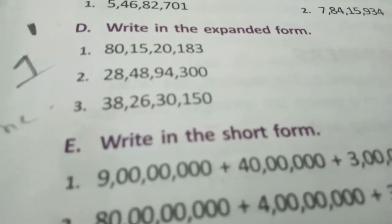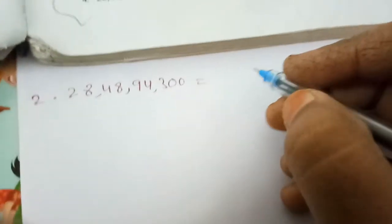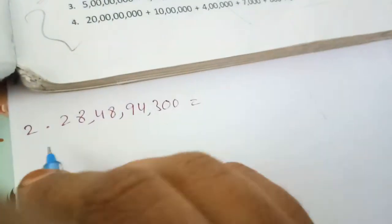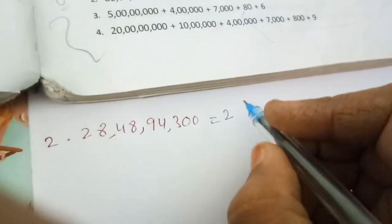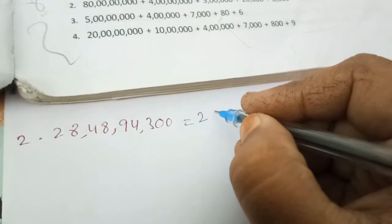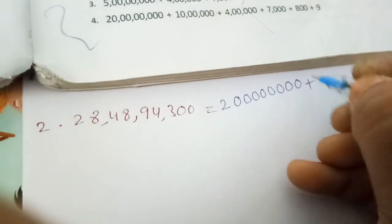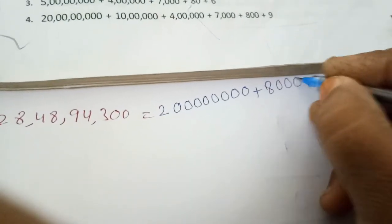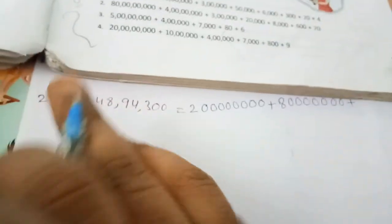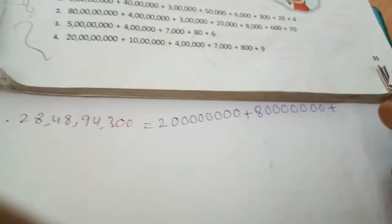The next number is 28 crore 48 lakh 94 thousand 300. We write its expanded form starting from the left. Twenty crore — eight zeros: write 2 followed by eight zeros, plus mark. Then eight crore — seven zeros: write 8 followed by seven zeros, plus mark. Note that as you move to the right, the number of zeros decreases — eight, then seven, then six, and so on.